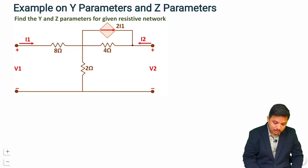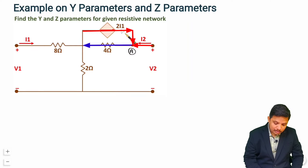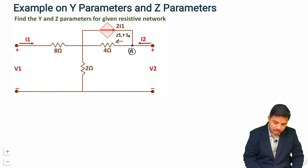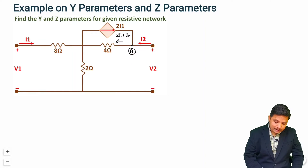Consider node A. At this node, current 2i1 and current i2 are entering. So in this direction the current will be the algebraic sum, that is 2i1 plus i2. And this branch is carrying current i1.